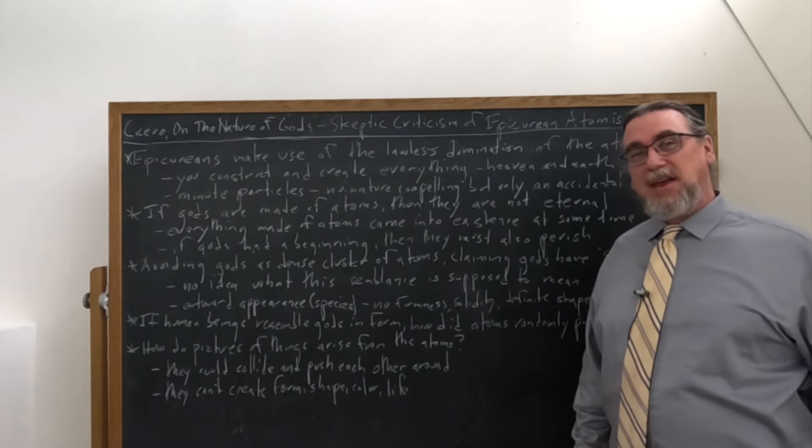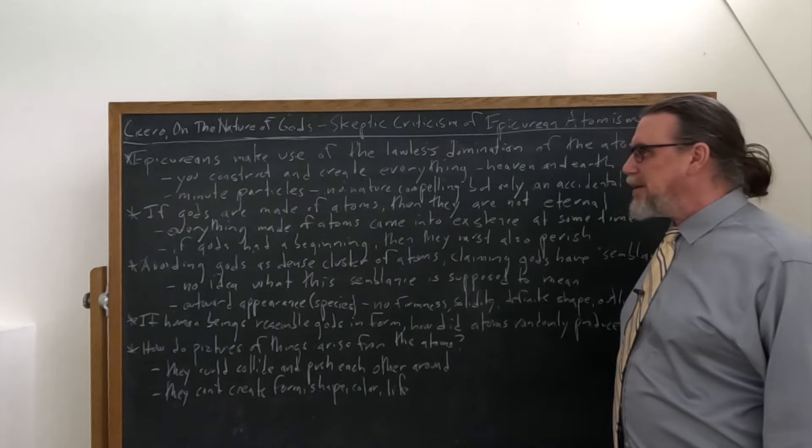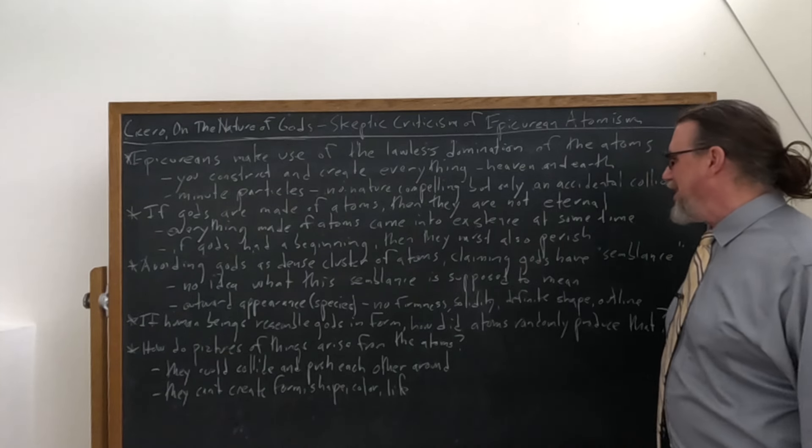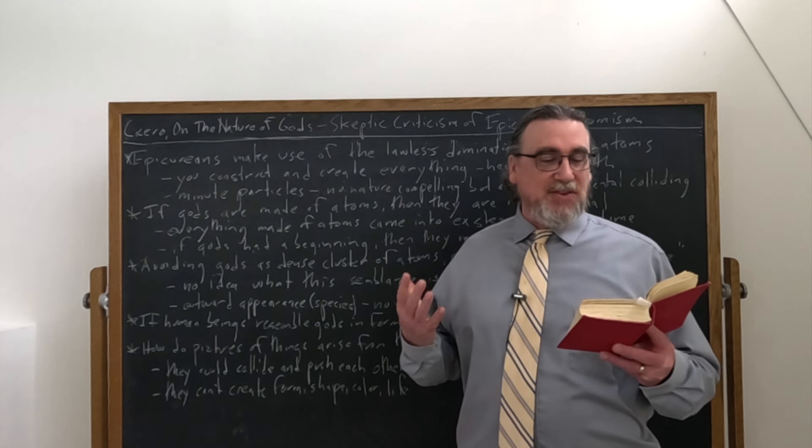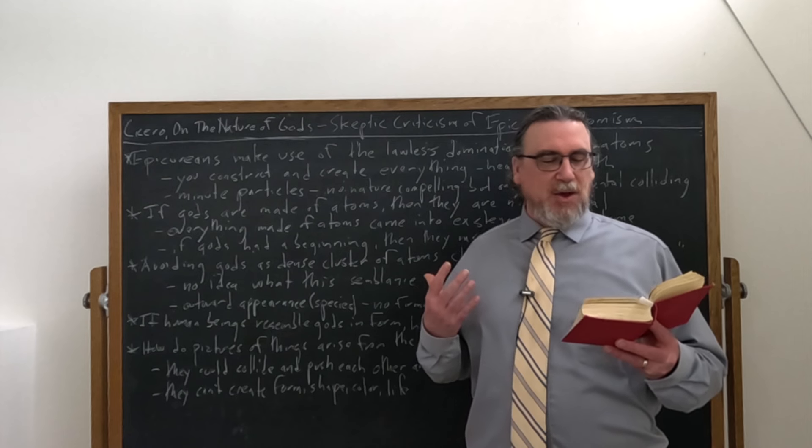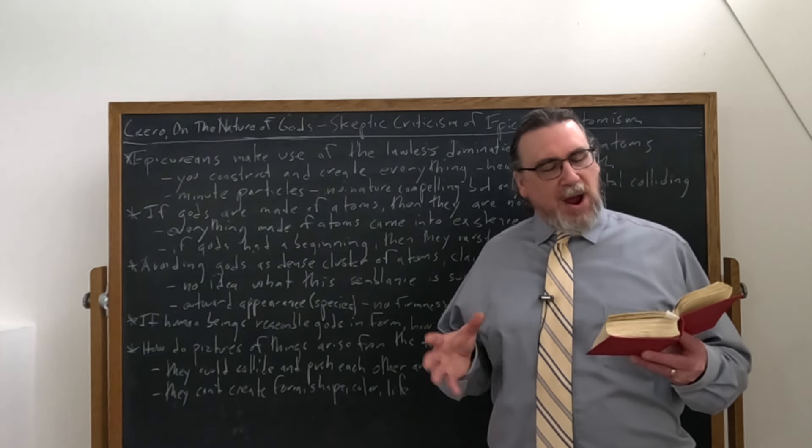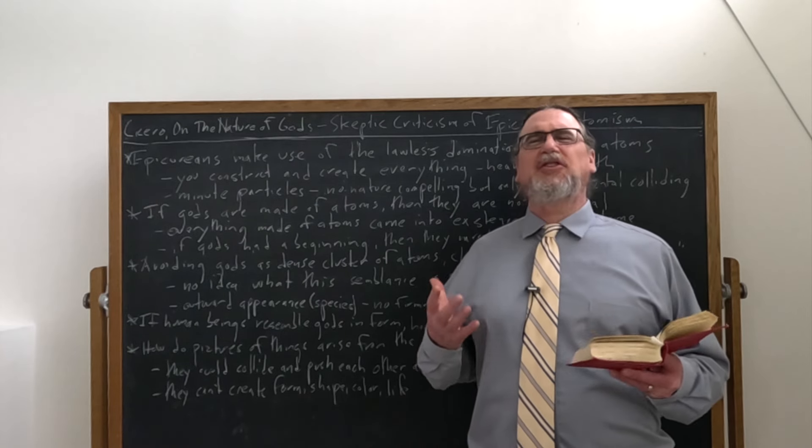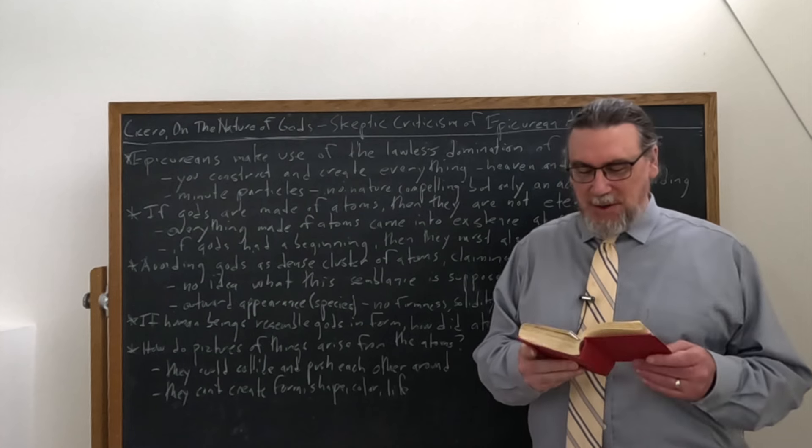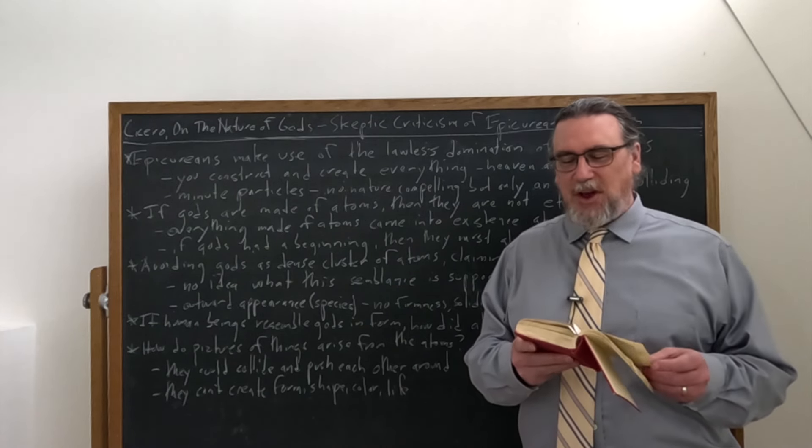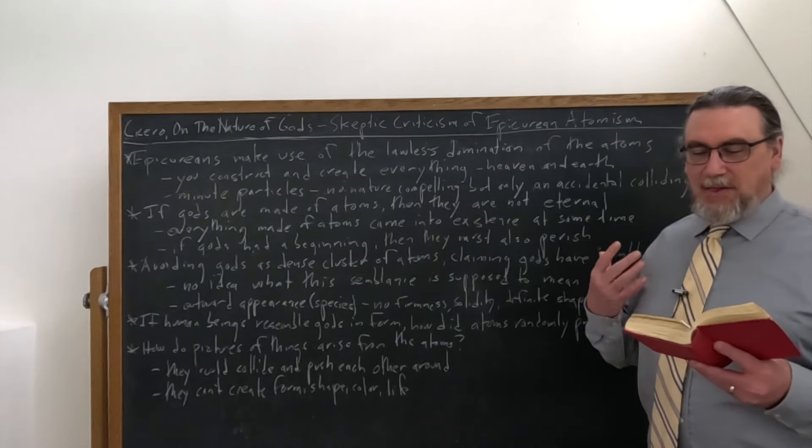It's also a way to explain how human beings get images of the gods in their minds, which is going to be part of the argument from common consent. But this is not particularly helpful. So what is this semblance? It's not body, but it's like body. Great. How is it like body? He says, I don't see how you Epicureans can keep a straight face when you say things like this. He says, I could understand what this meant if it related to wax and images or figures of earthenware. But what the hell does a semblance of body mean or a semblance of blood? I can't understand that. Neither can you Epicureans, even though you say these terms. And you're basically just repeating what it is that Epicurus himself has said without really understanding it.